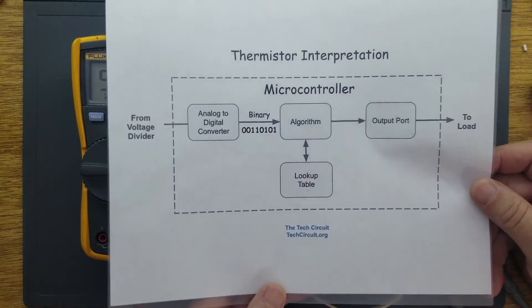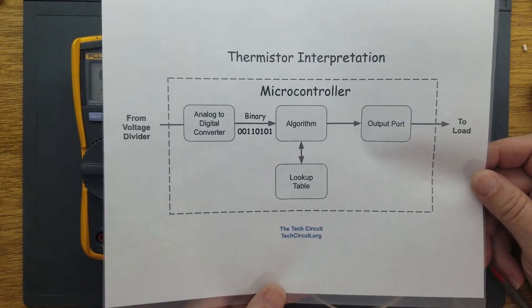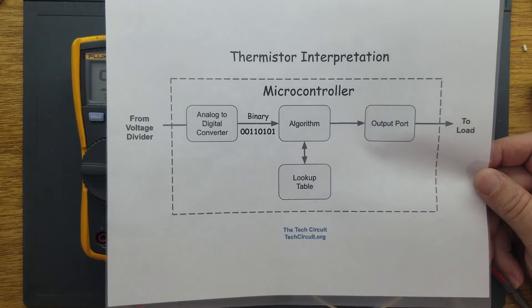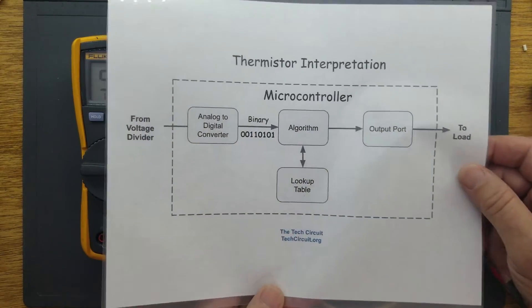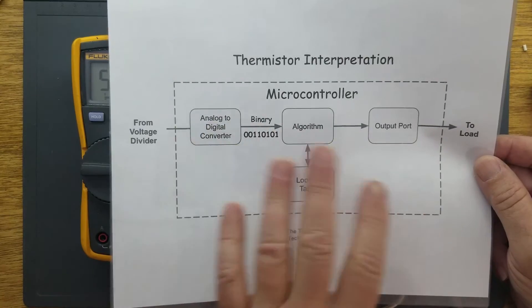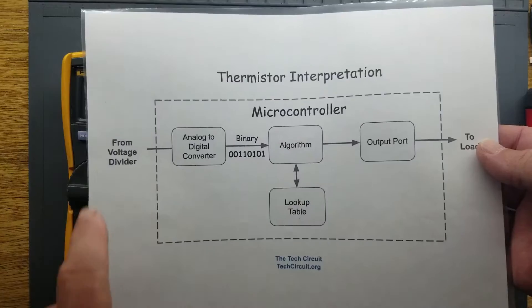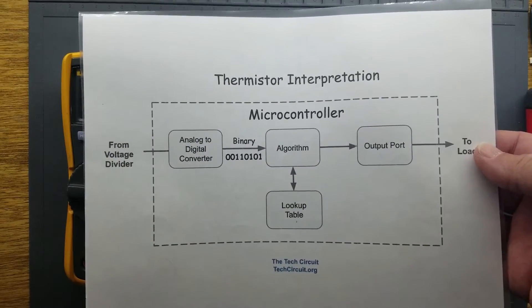This is basically how a thermistor is interpreted by a microcontroller. You're going to have what's known as a voltage divider here, and it's going to be processed by the microcontroller. But first, I will show you how this voltage divider is implemented.